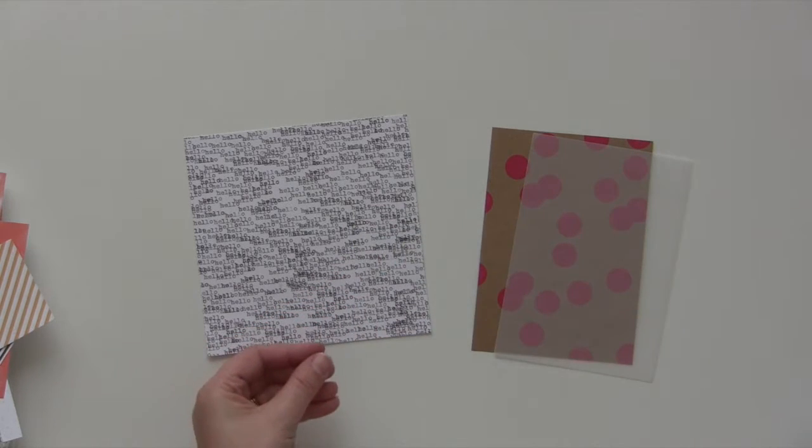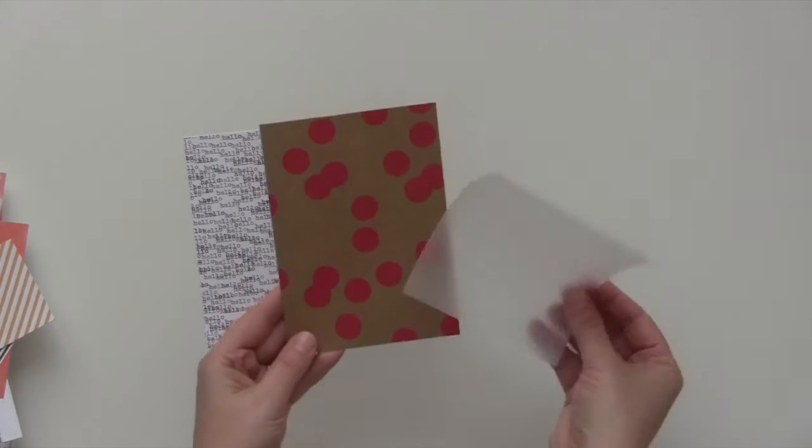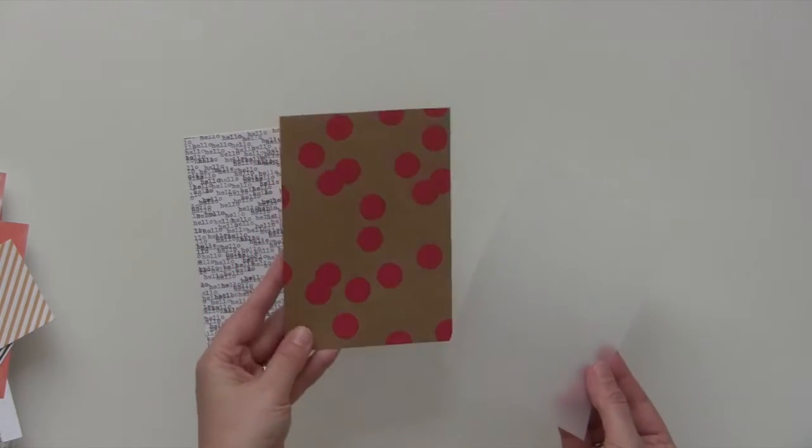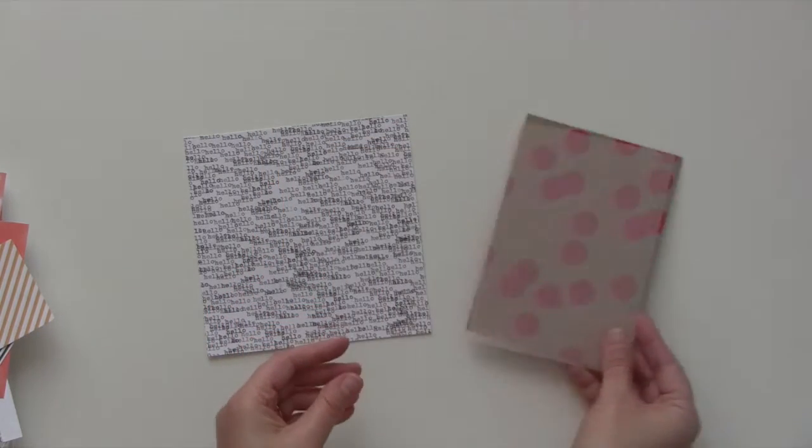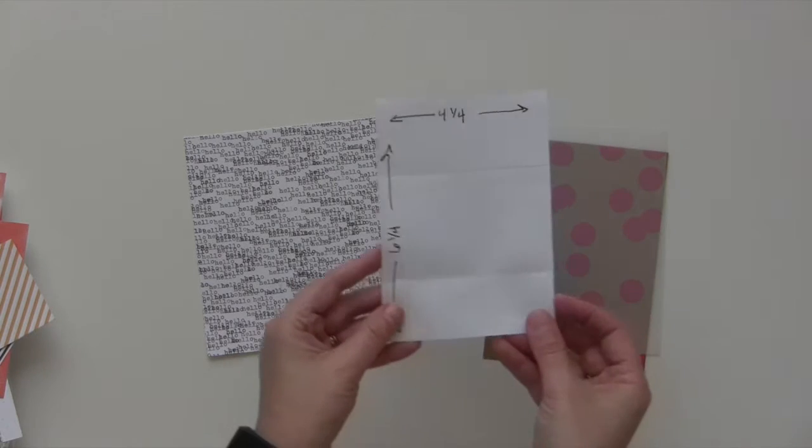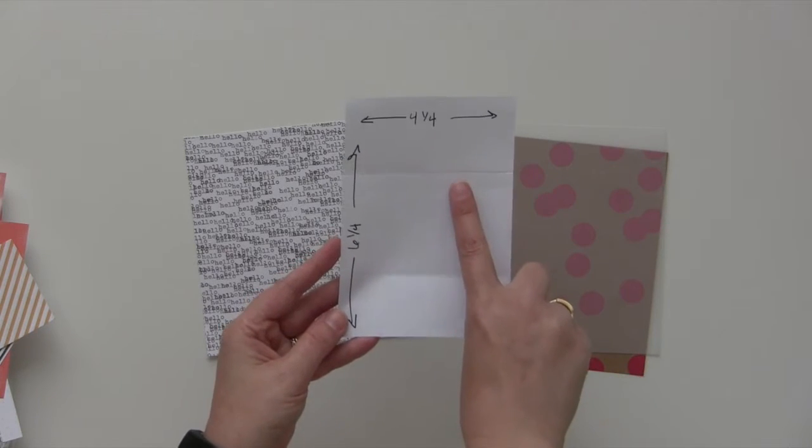When I made this gift card holder, I just totally winged it. Here are my papers: I'm using a piece of vellum and a piece of this Baxter paper, and they're trimmed to four and a quarter by six and a quarter.